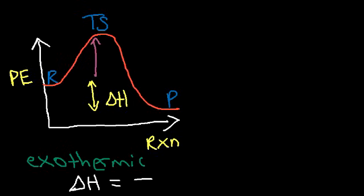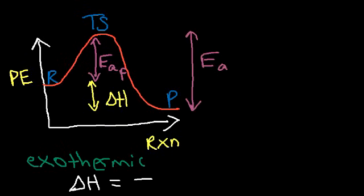The energy difference between the transition state and the reactants is known as the forward activation energy. The activation energy is the energy needed to get the reaction started — without that energy, the reaction will not work. One way to reach the activation energy is by increasing the temperature. The energy difference between the transition state and the products is the activation energy for the reverse reaction. You need enough energy to reach the transition state for the reaction to take place.